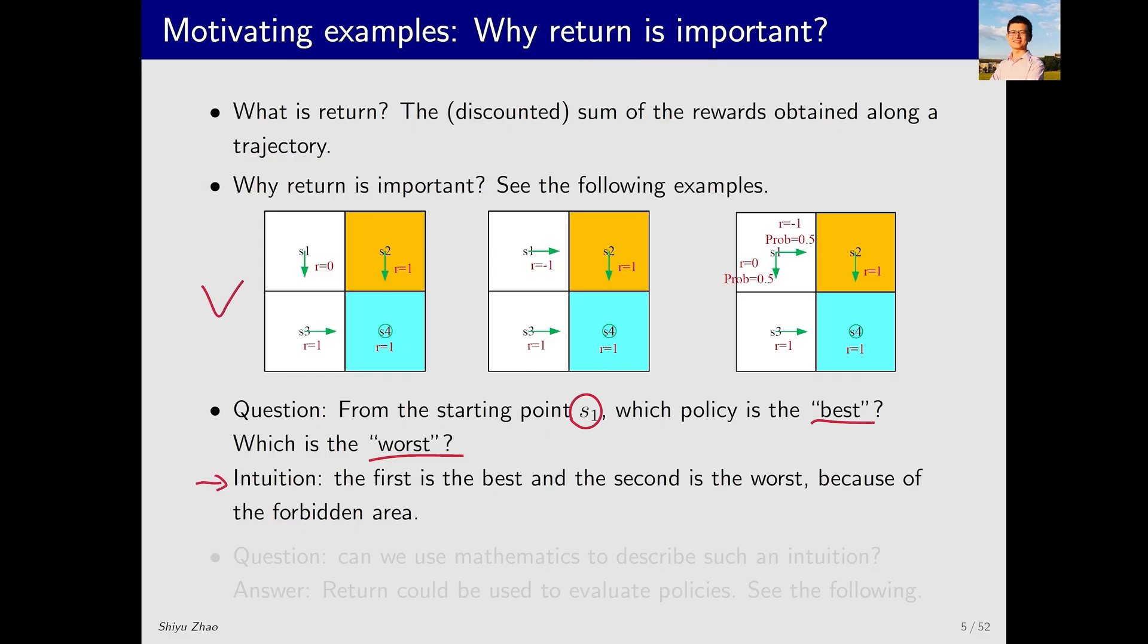Intuitively speaking, the first policy is the best, the second is the worst, and the third is neither good nor bad. Why? Intuitively, the first policy avoids the forbidden area, the second policy leads into the forbidden area, and the third policy has a certain probability of entering the forbidden area. This is intuition.